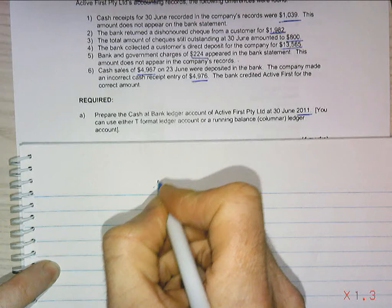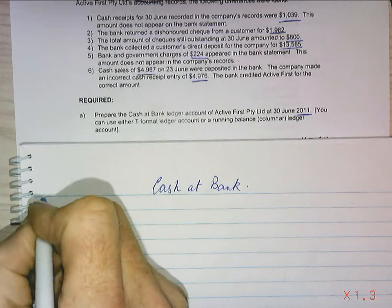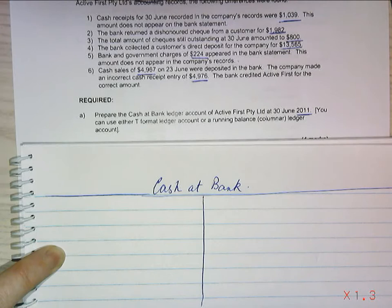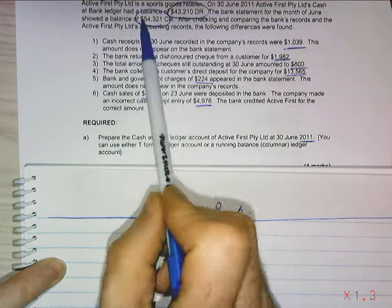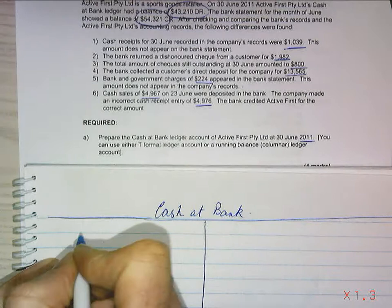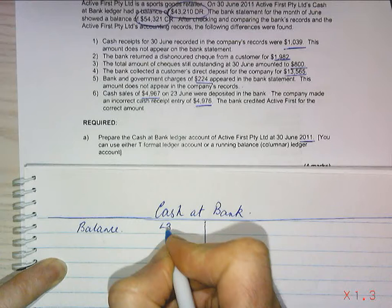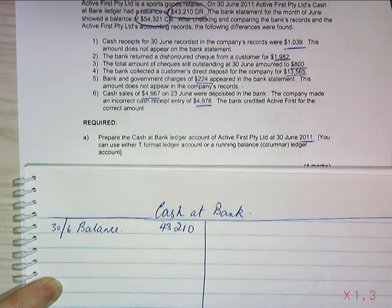I'm going to do a T-account. 'Cash at Bank' is the title I put on top, and I'm going to draw right across the page and down the page. From my records, it says that my bank ledger has a debit balance of $43,210, and that's at the 30th of June.